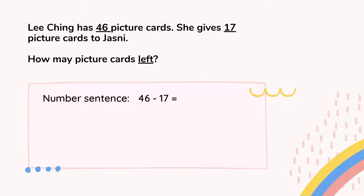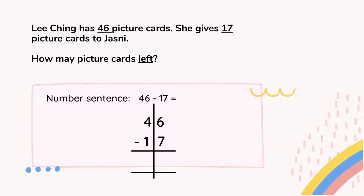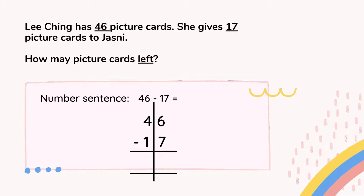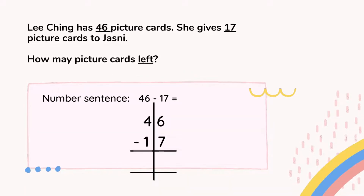You can see the number sentence as I show you on this page: 46 minus 17 equals. Next, after you write the number sentence, you need to write the numbers in vertical form. I already show you on this page how to write the numbers. As usual, we write the first number on top, the second number below, and we draw the lines. Don't forget the minus symbol.